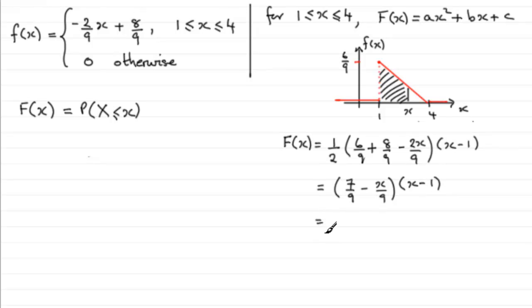Expand the brackets now, and we've got 7 ninths times x, so that's 7 ninths x. 7 ninths times the minus 1 is minus 7 ninths. And then minus x over 9 times x is minus x squared over 9. And finally, minus x over 9 times minus 1 is plus x over 9.